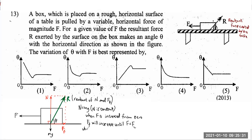When F is greater than the limiting friction FL, the friction becomes equal to the dynamic frictional force and remains constant. We've all learned this in friction: when the object starts moving, the frictional force remains constant regardless of the magnitude of the applied force.